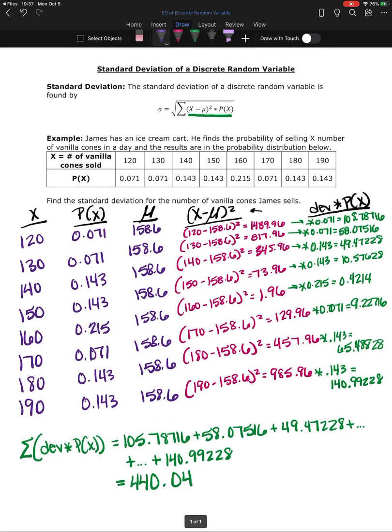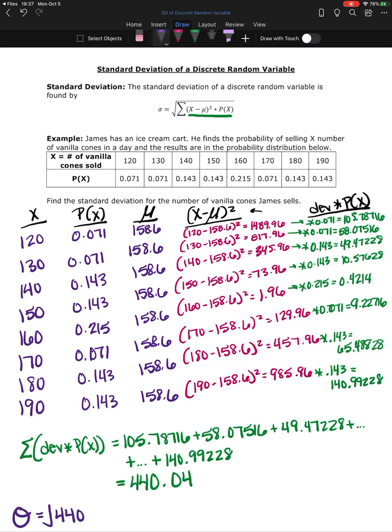So now there's one more step for the standard deviation and that is to take the square root of the sum that we just found. So the square root of 440.04 is 20.9771.